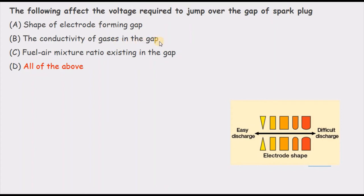The conductivity of the gas in the gap also affects the result, because electrical conductivity parameters play a role. The fuel-air mixture ratio existing in the gap also matters, because as the ratio changes, the properties of the gas between the two electrodes change. Therefore the correct answer is D — all of the above affect the voltage required to jump over the spark plug gap.